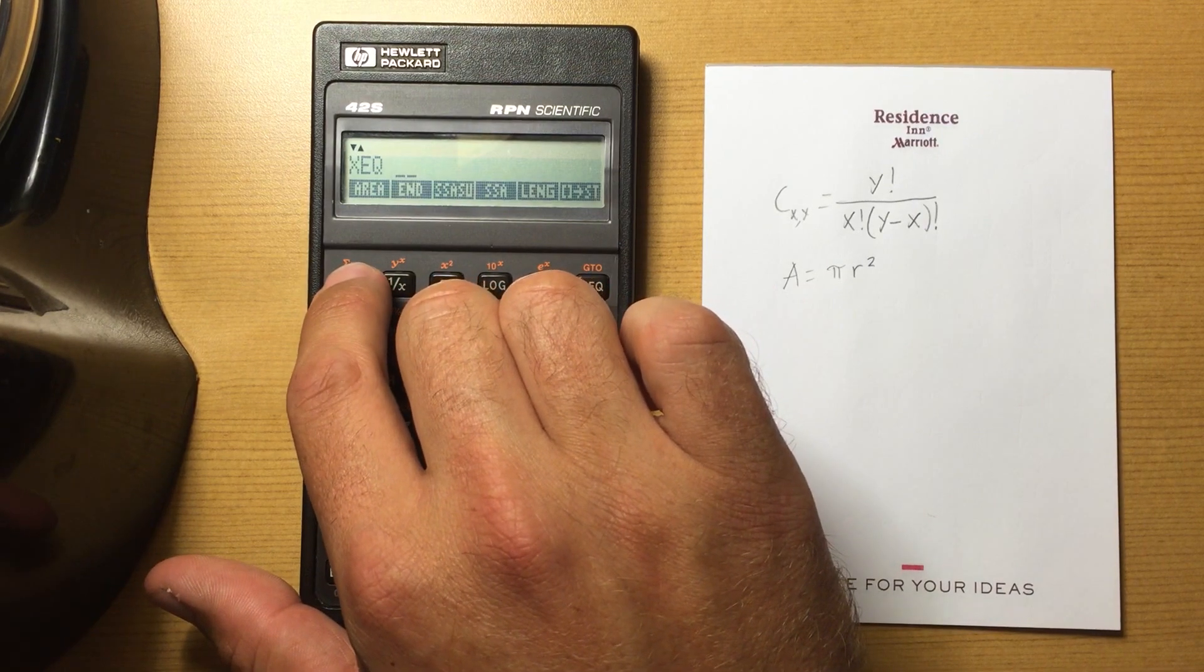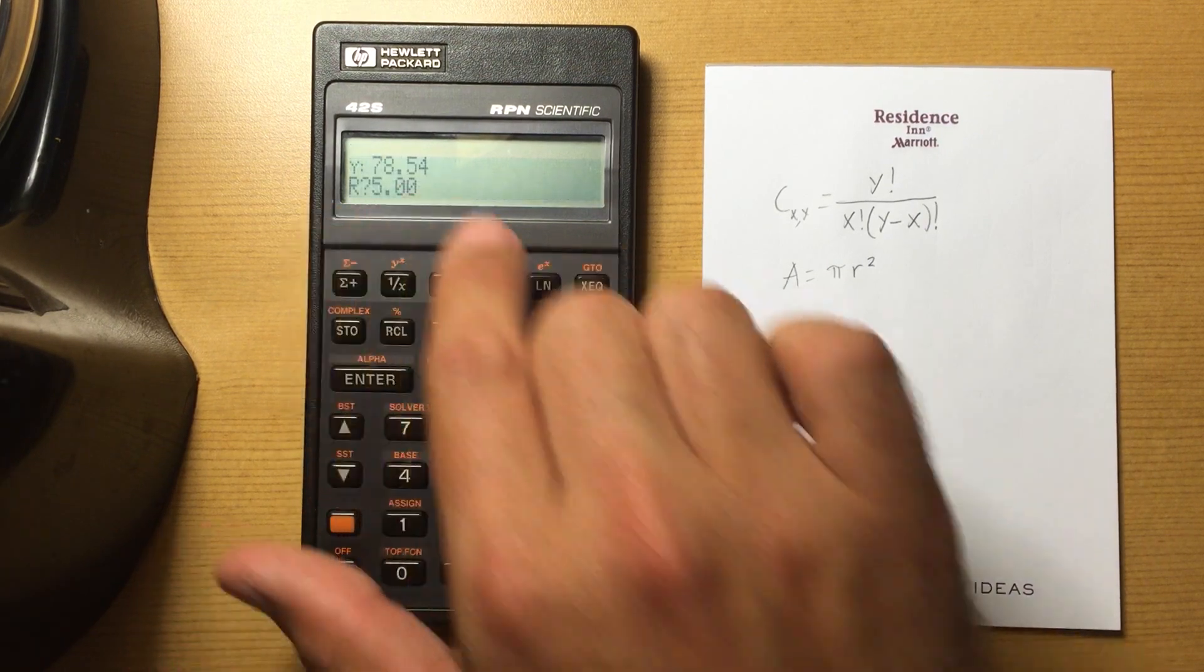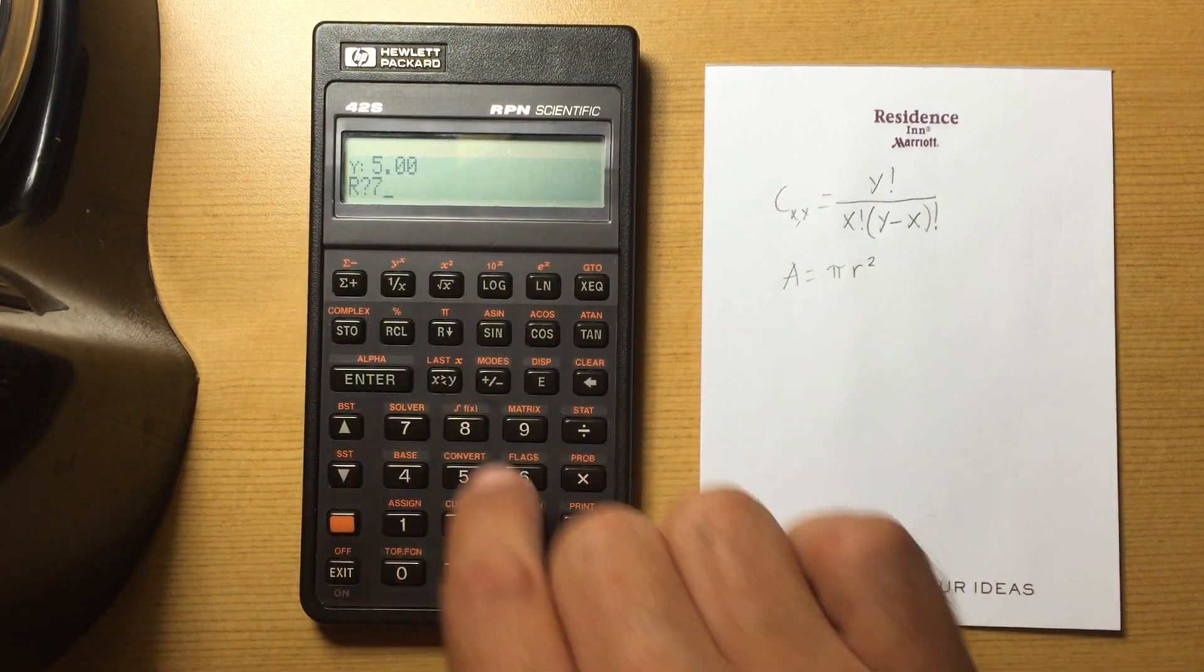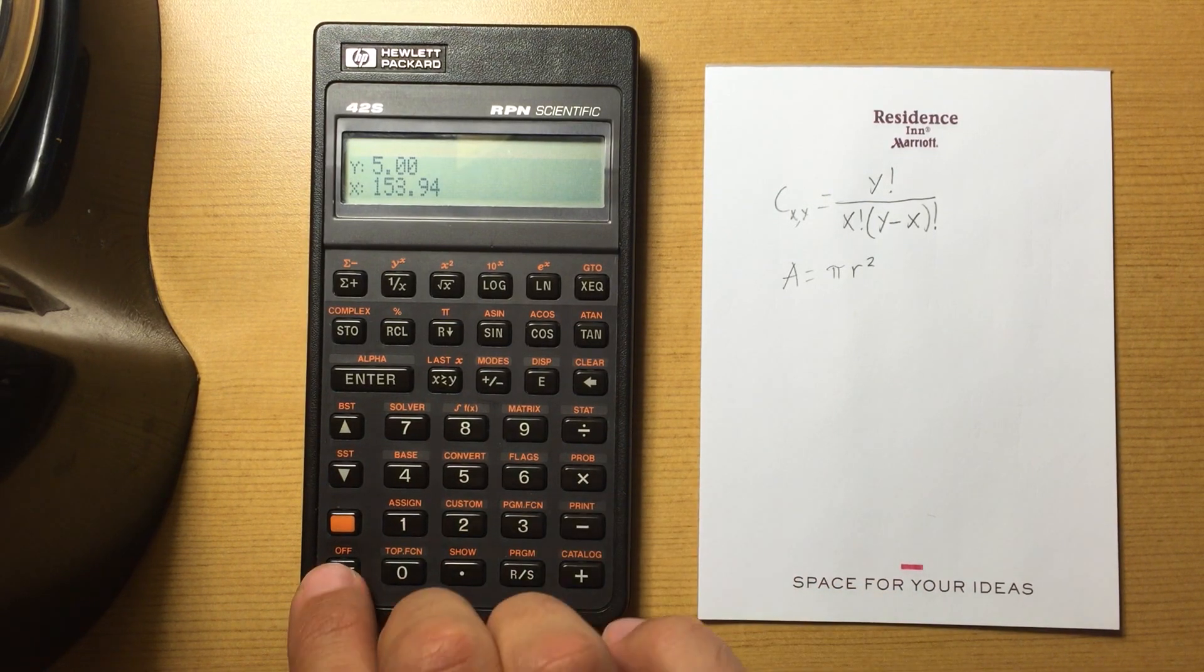I can execute it again. Ask me again for r. Let's do it for a different one. Run stop, 153.94.